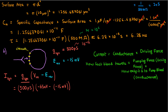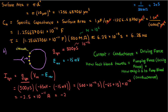So the synaptic current is 500 picosiemens times (negative 65 + 15) times 10 to the negative 3 volts, which gives negative 2.5 times 10 to the negative 11 amperes, or negative 25 picoamps. Notice that the current is negative, meaning positive charge is going inside the cell — just our sign convention for current.